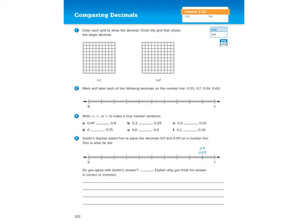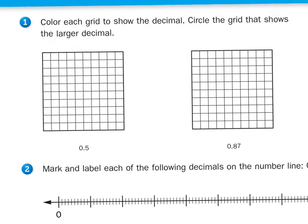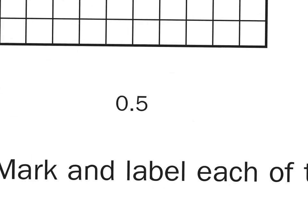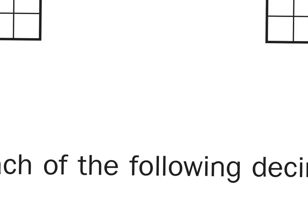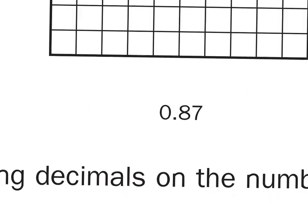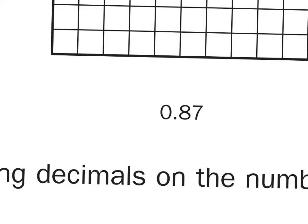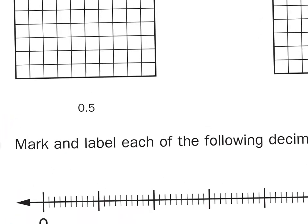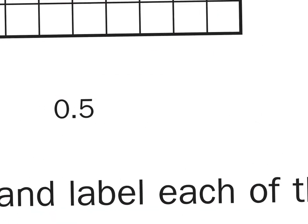The first question asks you to color in each grid to show the decimal, circle the grid that shows the larger decimal. So we have 0.5 and 0.87. Now, before we get started, I want you to look at this decimal right here, 0.5. There's one place value to the right of the decimal. That's 5 tenths. Now, over here, we have 0.87, which has a tenth and a hundredth.